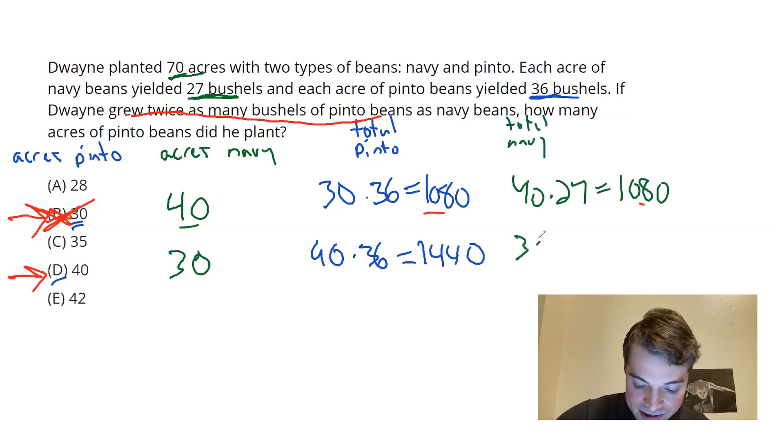On navy, I now have 30 acres, 27 an acre, that's the same amount. But 40 times 27, that'll get me 810.